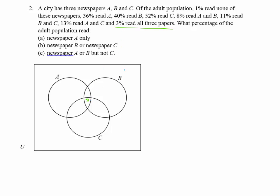13% read A and C — that's their intersection — but 3% read all three, so 13 minus 3 gives 10 in just the A and C region. 11% read B and C, so 11 minus 3 gives 8 in just the B and C region. 8% read A and B, so 8 minus 3 gives 5 in just the A and B intersection.